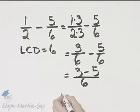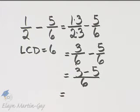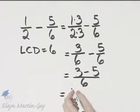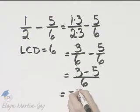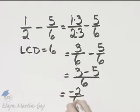And now let's simplify 3 minus 5. If you need to, go ahead and write it as 3 plus negative 5. Whichever way you go, 3 minus 5, that's negative 2 over 6.